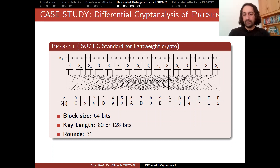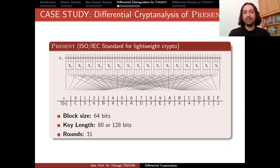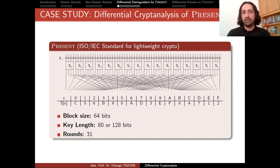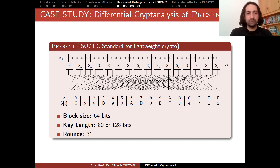In order to see how the input difference is affected at the output, we have to see what happens when we introduce a small difference on the input. We want to see how each layer of an SPN cipher like PRESENT affects the input difference that we have introduced. Let's recall what the PRESENT cipher was about.